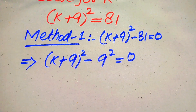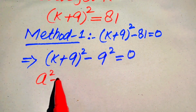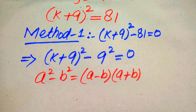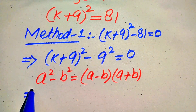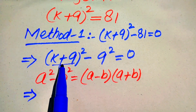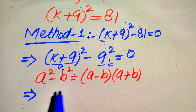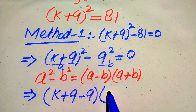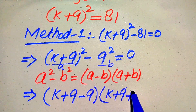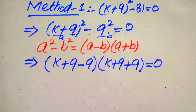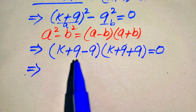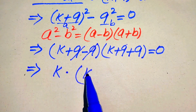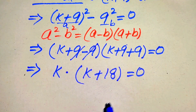Now we use the algebraic formula: a² − b² = (a − b)(a + b). According to this formula, the base of the first term is our a and the base of the second term is our b. So we write: (k + 9 − 9)(k + 9 + 9) = 0. Here −9 and +9 cancel, leaving k, and 9 + 9 becomes 18, giving us k(k + 18) = 0.